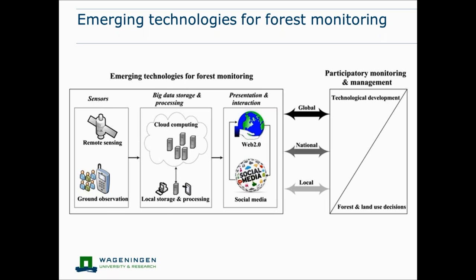On the other hand, technology is really developing. From the sensor side, we have lots of ground sensors like mobile phones and social media — all kinds of ground sensors easily available, even in developing countries. In space, we have quite a lot of sensors now: Landsat, Sentinel, and Planet Lab launching microsatellites. In terms of data processing and storage, we've moved from single computers to cloud computing, offering huge varieties of processing power.